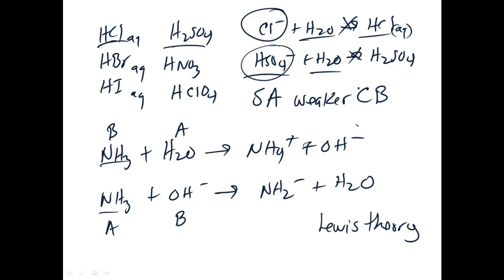Lewis theory: a Lewis acid is an electron pair acceptor, and a Lewis base is an electron pair donor. Definitely know this statement: the stronger the acid, the weaker the conjugate base.